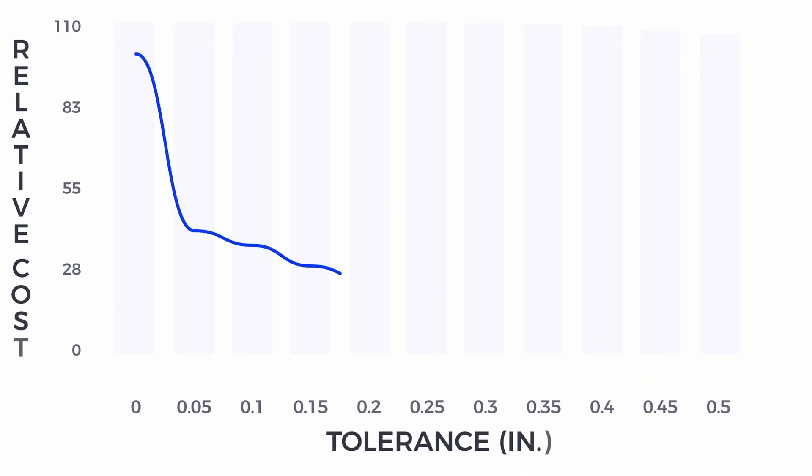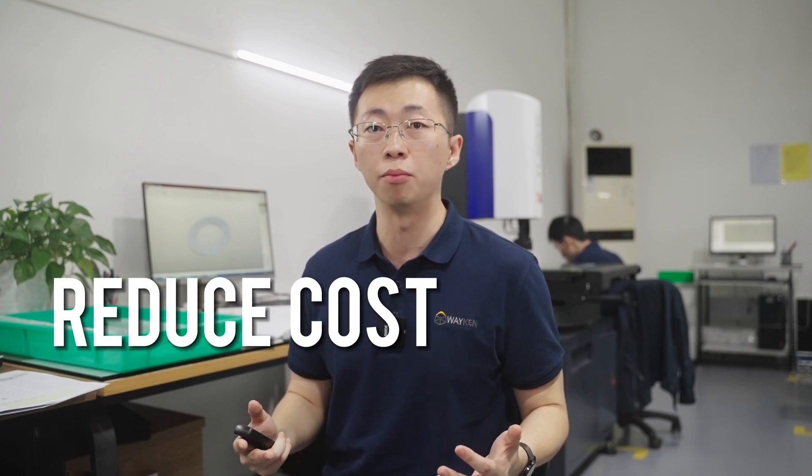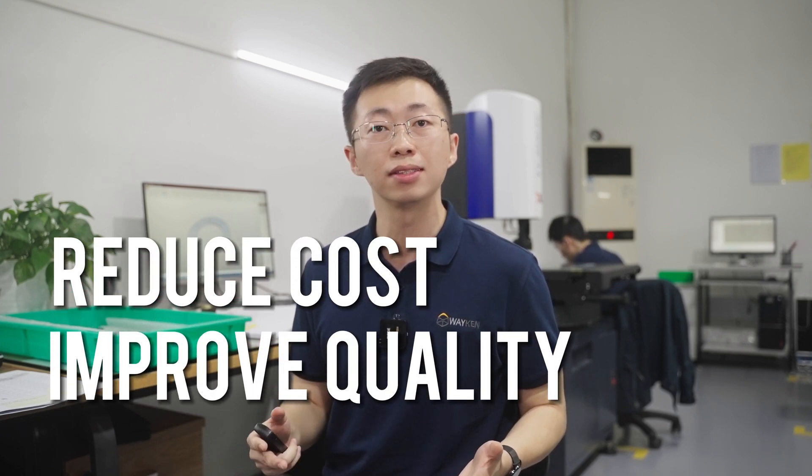Tolerances typically have an inverse relationship with manufacturing cost, as tighter tolerances tend to be more challenging and costly to achieve. Therefore, how can we reduce cost and improve quality in tolerance settings?